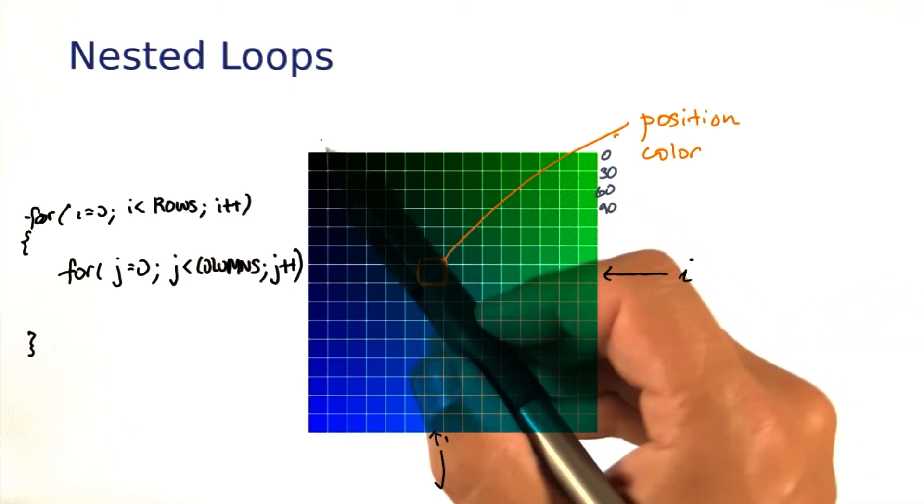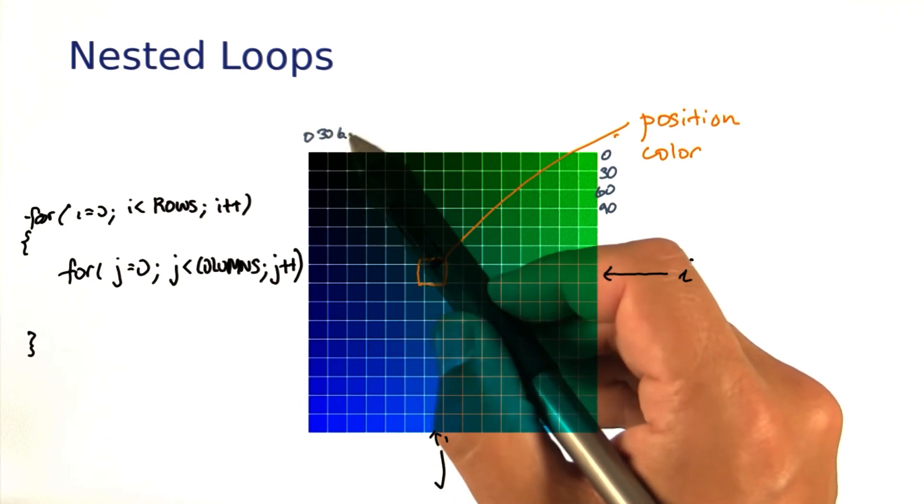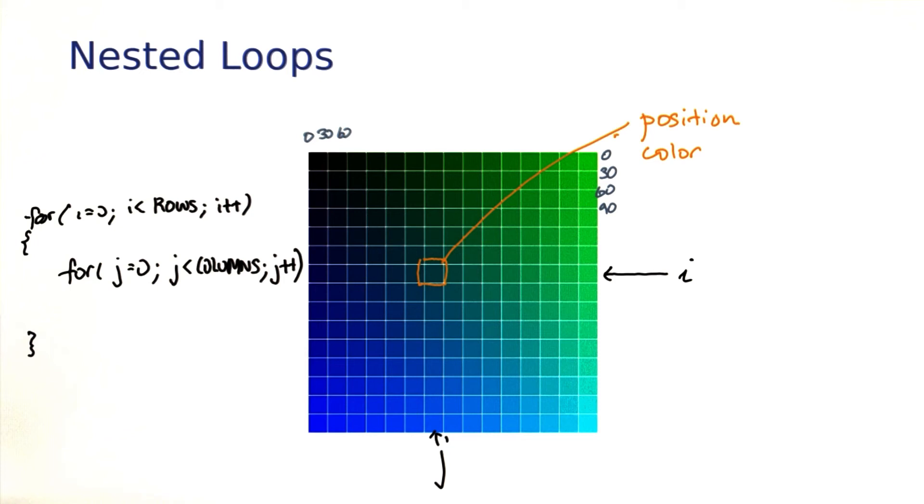And as j, the column index, goes from 0 to the number of columns, you want the x offset also to be 0, 30, 60, and so on.